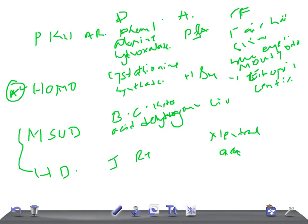So all the metabolic disorders discussed here — phenylketonuria, homocystinuria, maple syrup urine disease, and Hartnup disease — are autosomal recessive. Thank you so much for watching this video. Take care.